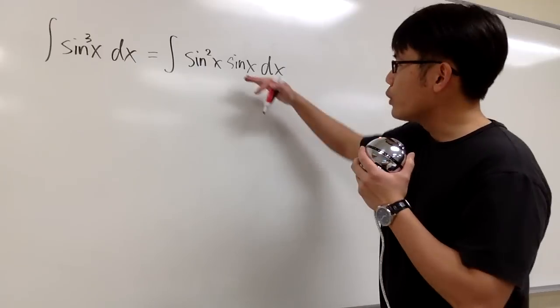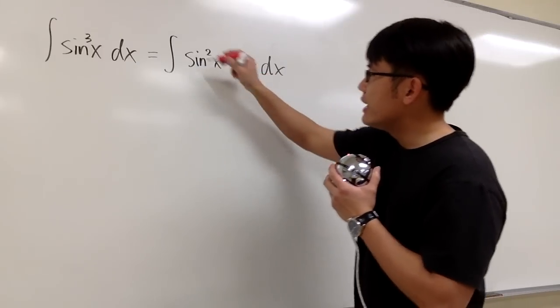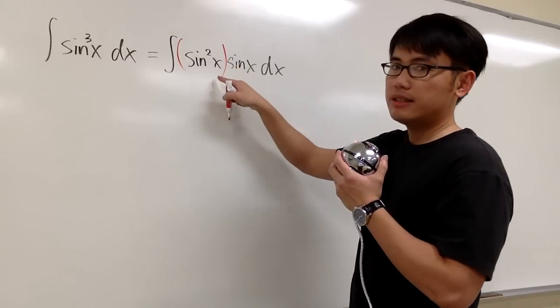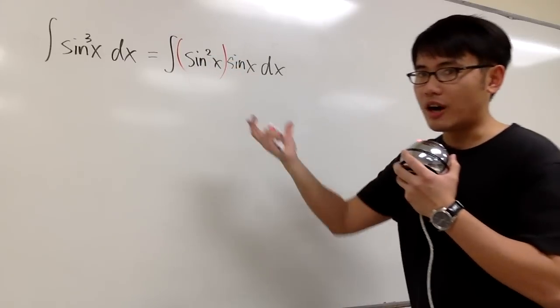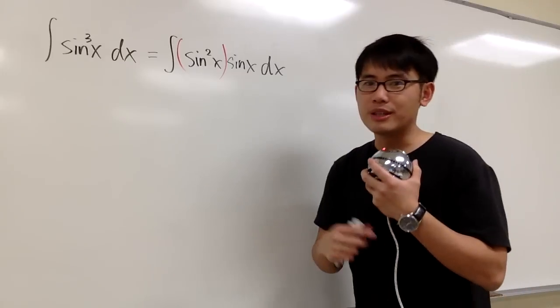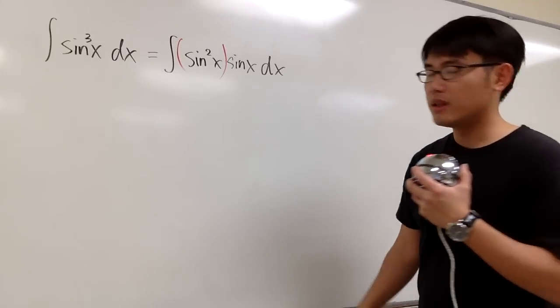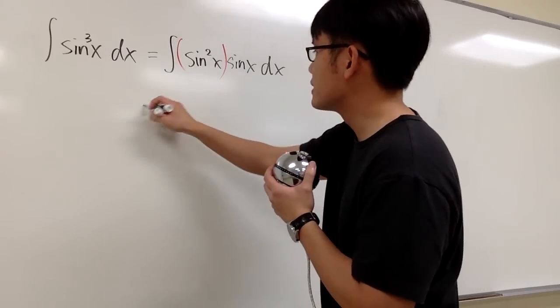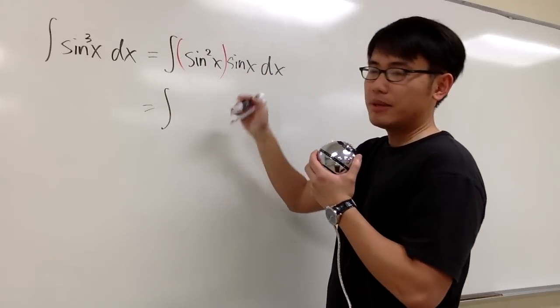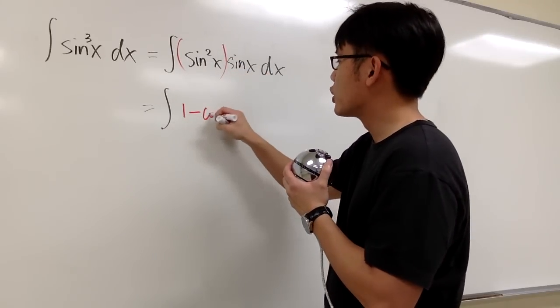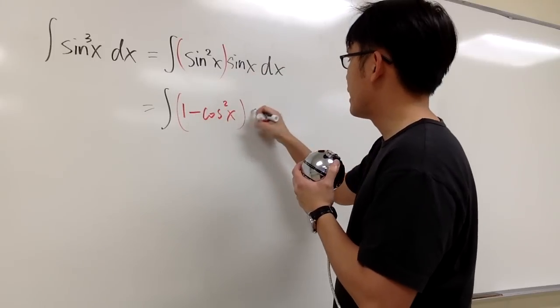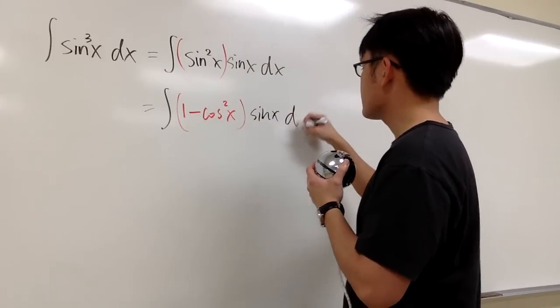The reason for us to do that is I want to save a sine factor here, and then let's look at this part. I can look at this as sine to the second power x, and we'll try to convert that into an expression in terms of cosine. That way we can just use u-substitution to finish this up. And this is not bad because we can just change this immediately, because sine to the second power x is the same as one minus cosine to the second power x. And then we multiply by sine x right here, dx.